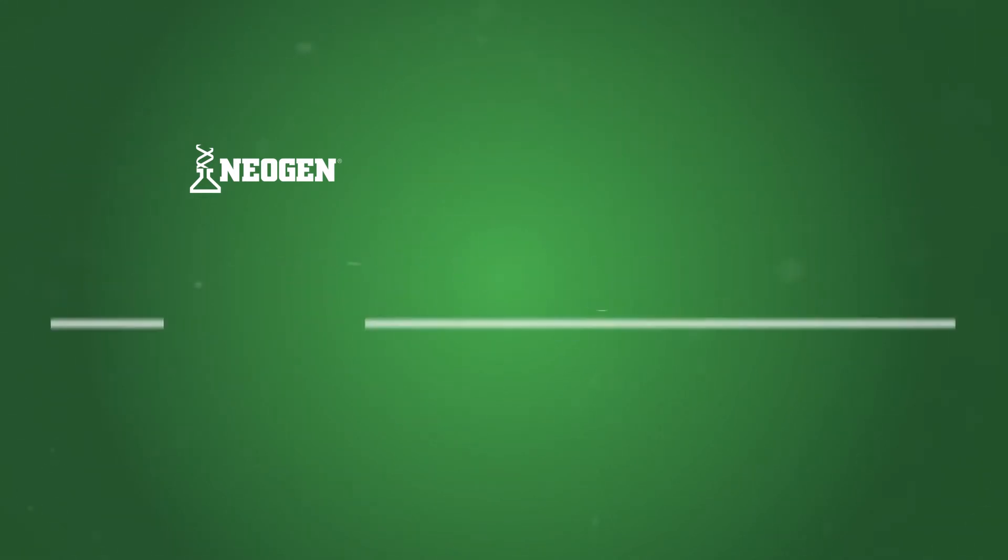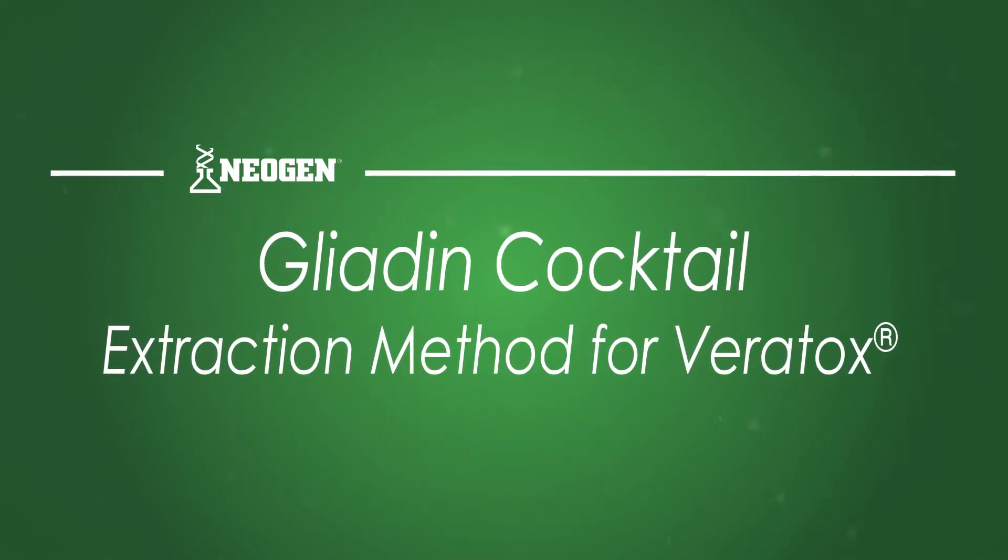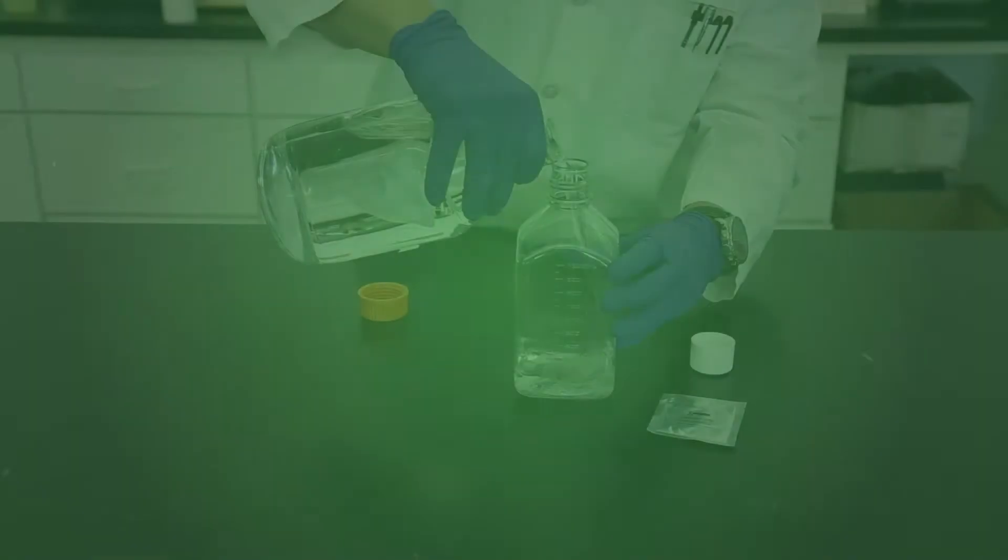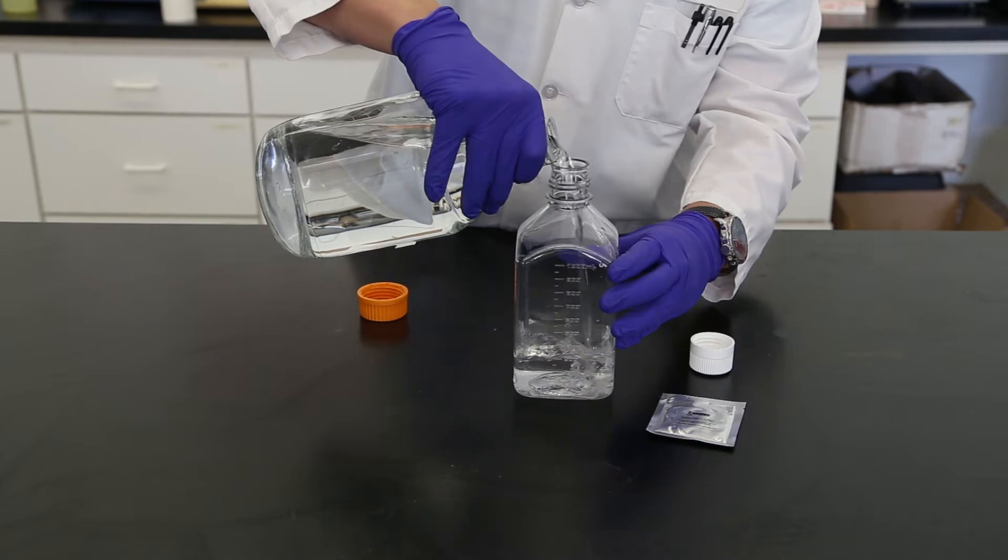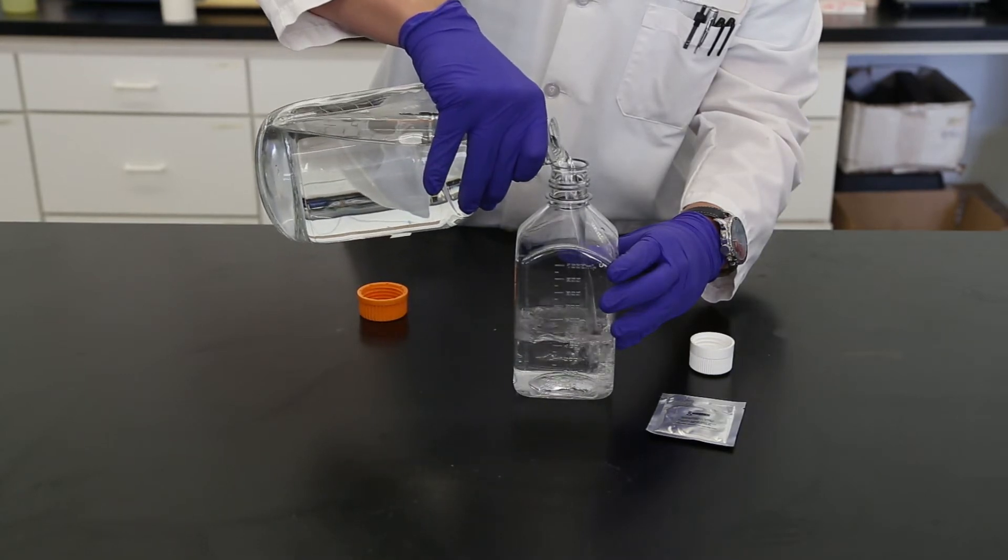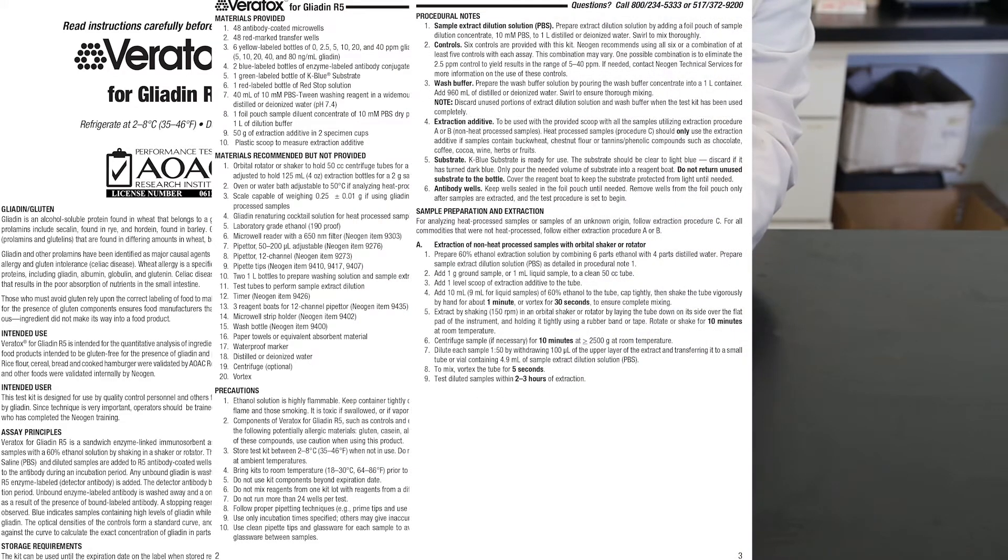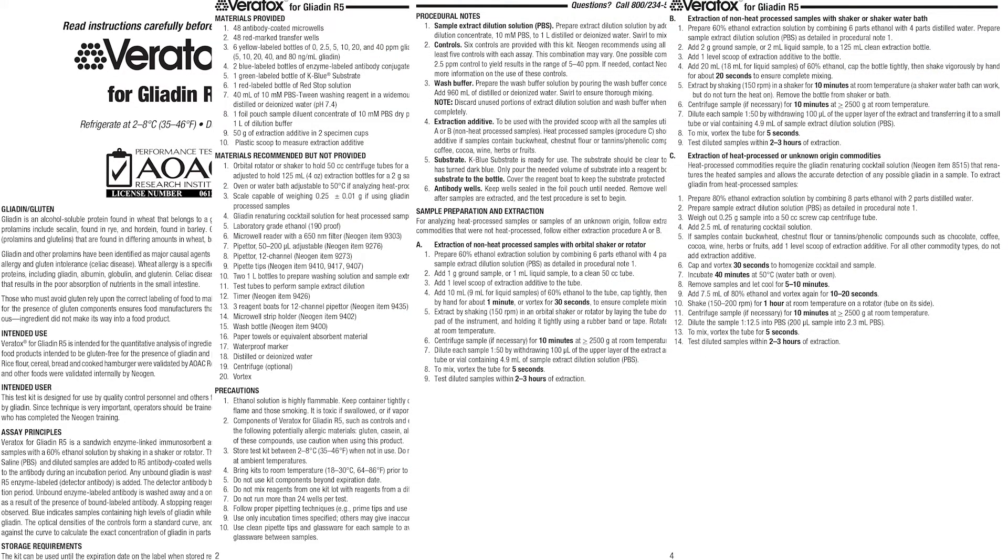This video demonstrates the most accurate and efficient method of extracting commodities that have been heat processed for analysis on Neogen's Gliadin R5 assay. This video serves only as a companion to the written materials supplied with the Veritox for Gliadin R5 test kits. Please read and follow the written instructions in their entirety.